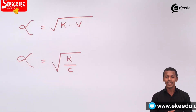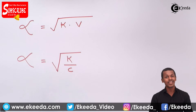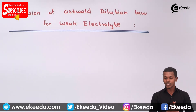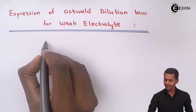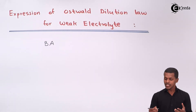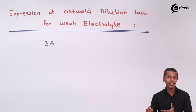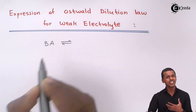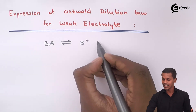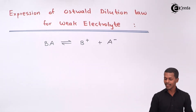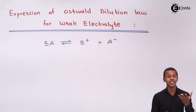Let us make this expression and see how we can arrive at this statement. We are going to derive the expression for the dilution law for weak electrolyte. Let us take a weak electrolyte — to generalize, let's call it BA. Since it is a weak electrolyte, it will undergo incomplete dissociation, giving B⁺ as well as A⁻ ions when dissolved in a polar solvent.